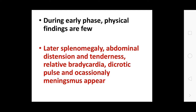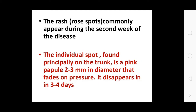During the early phase, physical findings are few. Later, splenomegaly, liver enlargement, abdominal distension, tenderness, relative bradycardia, and dicrotic pulse may appear. Rose spots commonly appear during the second week.